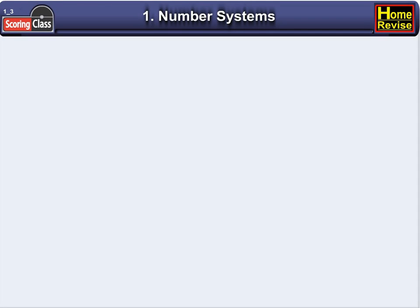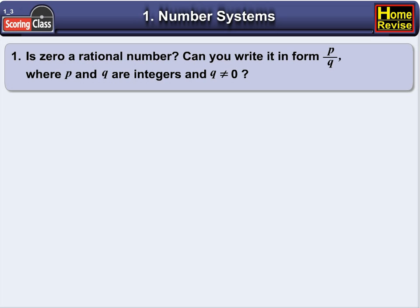Exercise 1.1. Is 0 a rational number? Can you write it in the form P upon Q, where P and Q are integers and Q is not equal to 0?